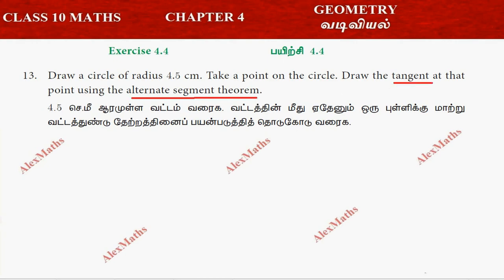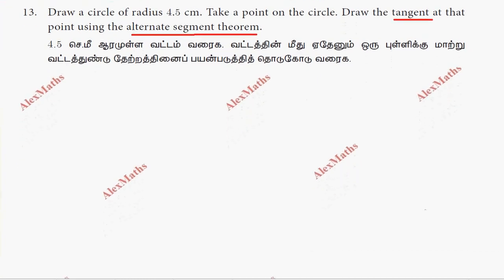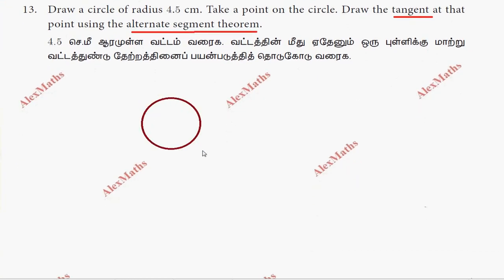We have a circle with radius 4.5 cm. Take a point on the circle.